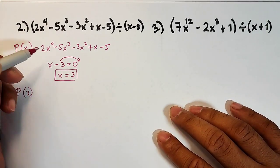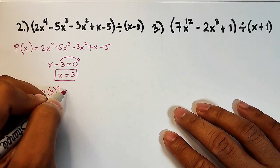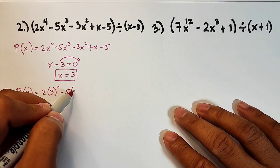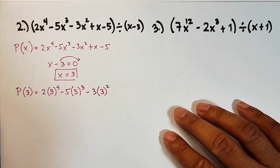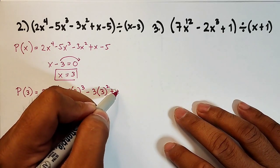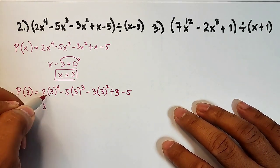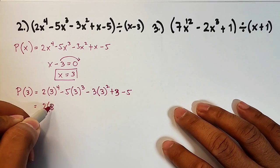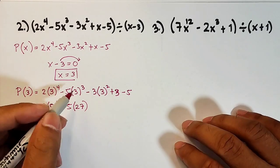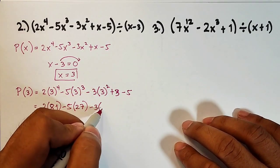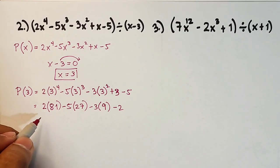Replacing all x's with 3, it becomes: 2 times 3 to the 4th power, minus 5 times 3 cubed, minus 3 times 3 squared, plus 3, minus 5. Simplifying: 3 to the 4th power is 81, so 2 times 81 is 162. Then 3 cubed is 27, so negative 5 times 27 is negative 135. Then 3 squared is 9, so negative 3 times 9 is negative 27. And 3 minus 5 is negative 2.